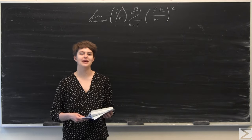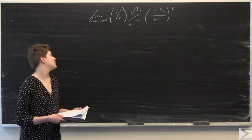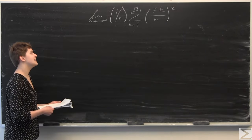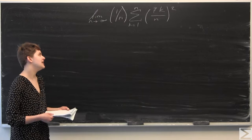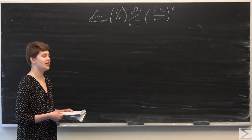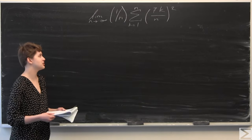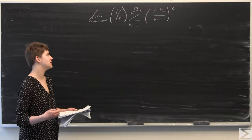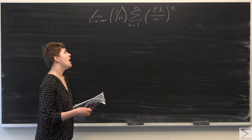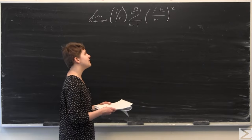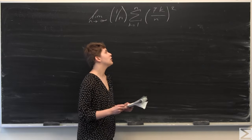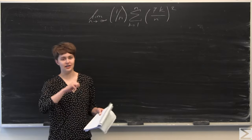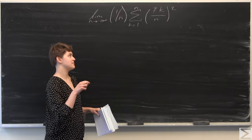So this week's problem of the week asks you to evaluate the limit as n goes to infinity of 1 over n times the summation from k equals 1 to n of 7k over n, all squared.